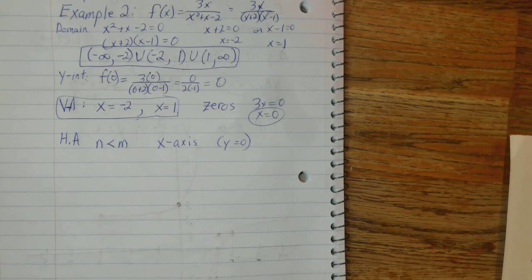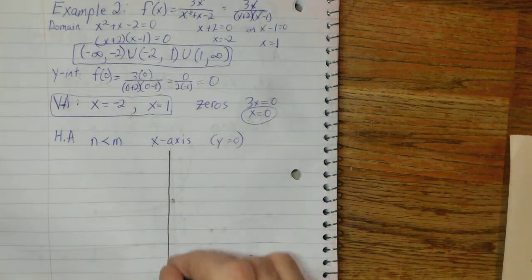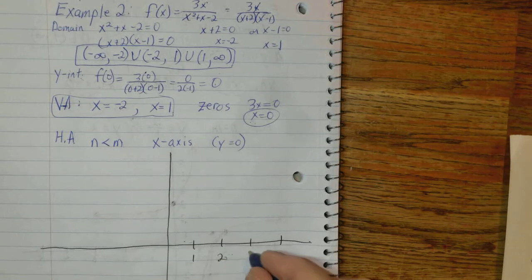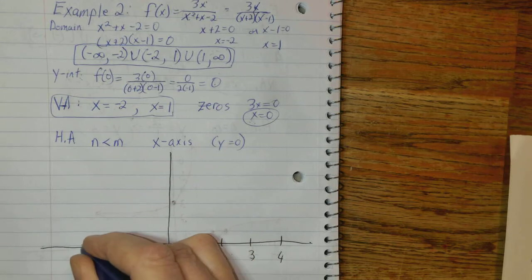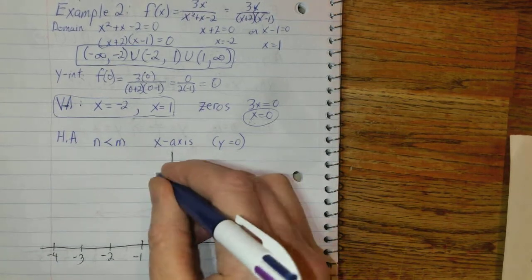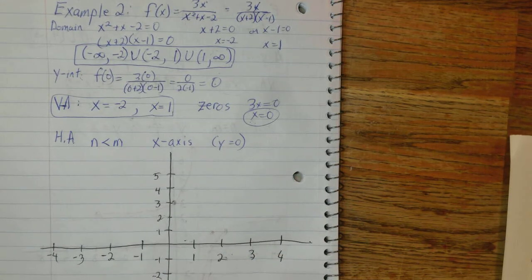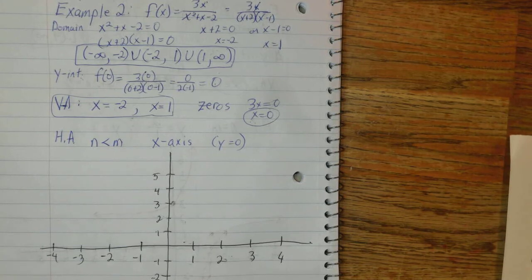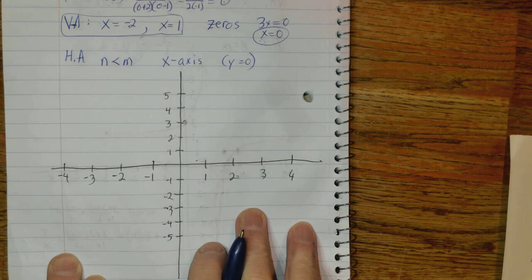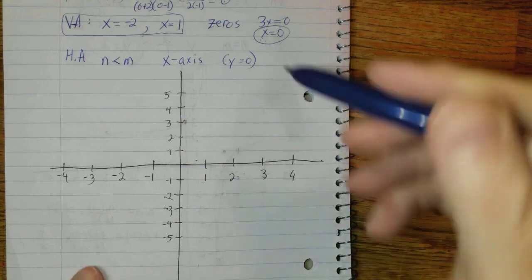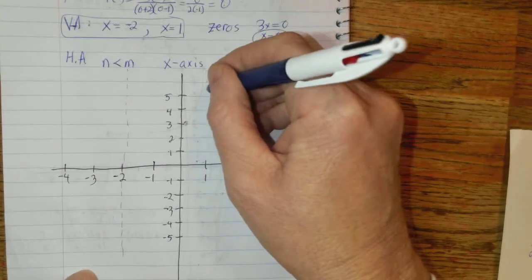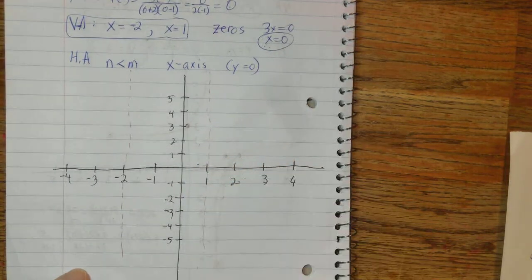All right. Now, it is time to start drawing. So, 1, 2, 3, 4, negative 1, negative 2, negative 3, negative 4, 1, 2, 3, 4, 5. And let's get the vertical asymptote drawn. So, 1, both of them, negative 2 is a vertical asymptote. A little curvy there. 1 is a vertical asymptote.